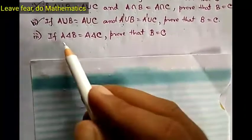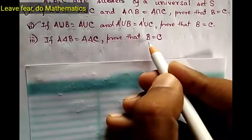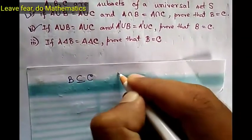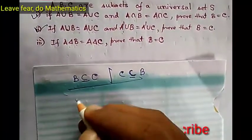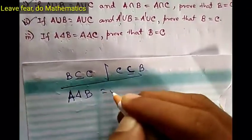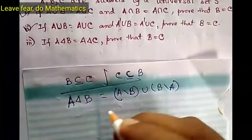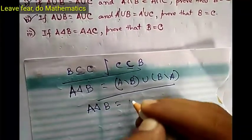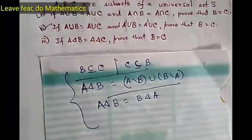Now we are going to prove the third result: if A symmetric difference B equals A symmetric difference C, then prove that B equals C. To show two sets B and C are the same, we have to show that B is a subset of C and C is a subset of B. The definition of A symmetric difference B is: A symmetric difference B equals (A difference B) union (B difference A). Also, A symmetric difference B equals B symmetric difference A.